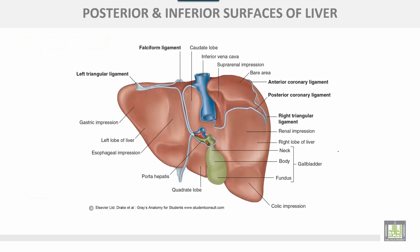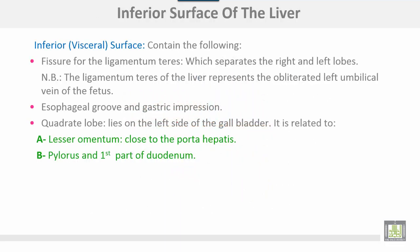On the posterior surface of the liver, this groove is for the inferior vena cava. Inferiorly there is the porta hepatis, and there is a caudate process connecting the caudate lobe with the rest of the right lobe. The remaining part here is the inferior surface, sometimes called the visceral surface, which contains the fissure for ligamentum teres, separating the right and left lobes from each other.